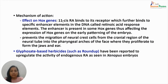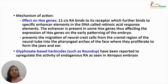The mechanism of action of Retinoic Acid involves a major effect on Hox genes. The active form, 11-cis-retinoic acid, binds to its receptor, which further binds to specific enhancer elements in the DNA called retinoic acid response elements. These enhancers are present in some Hox genes, affecting their expression and thus the early patterning of the embryo. Low levels generate the anterior-posterior axis, while high levels alter early patterning. This prevents migration of neural crest cells from the cranial region into the pharyngeal arches of the face, where they normally proliferate to form jaws and teeth.